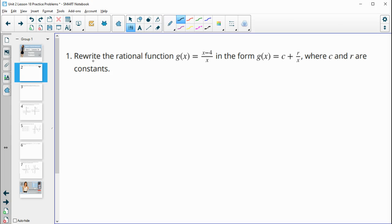Number one says rewrite the rational function g(x) = (x - 4)/x in the form g(x) = c + r/x, where c and r are constants. So in this case, when we just have this x on the bottom, we can just divide each of these terms by x. So we're going to take and separate g(x) and take x divided by the bottom and negative 4 divided by the bottom.